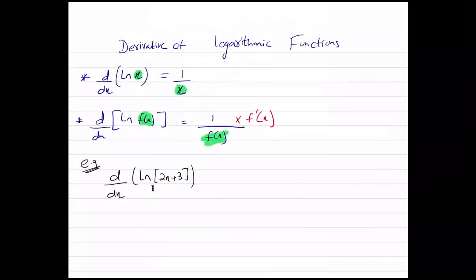Now we are going to look at differentiation of logs — specifically the ln form, which is to the base e. The differentiation of ln x is 1 upon x. The rule: 1 upon whatever is inside the bracket. That is the differentiation. As a general rule, if y equals to ln f of x, then the differentiation is 1 upon f of x multiplied by the differentiation of f of x.